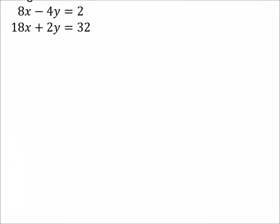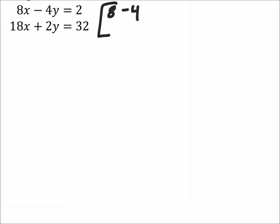Let's first change this to a matrix. So I got 8, negative 4, 2. That's a bad 2. And I got 18, 2, 32.